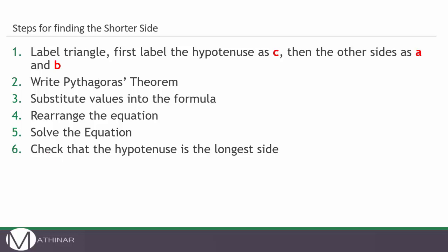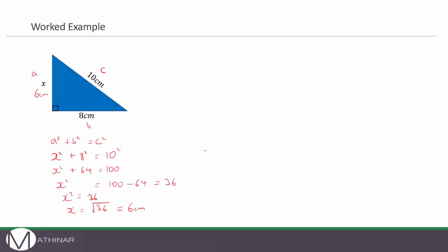Finally we need to check that the hypotenuse is the longest side. This side was 6, this side was 8, and the hypotenuse is 10, which is still the longest side. So that seems like a reasonable answer.